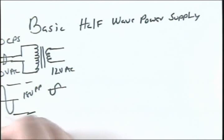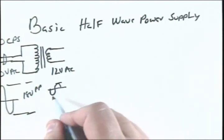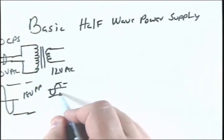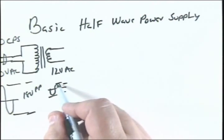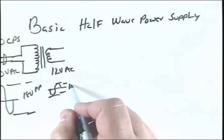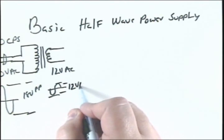So when that gets inverted, we're going to actually have an RMS value, not peak to peak value, of around 12 volts AC.